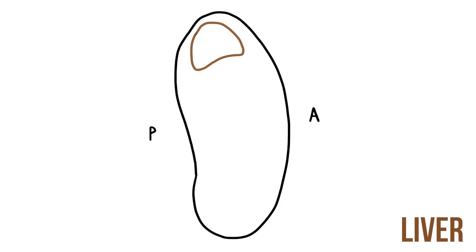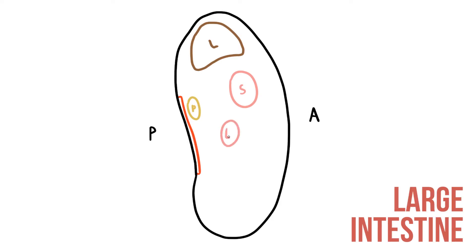So at the top we'll have the liver. Posteriorly we'll have structures like the pancreas and aorta. And then we need to add the great and good of the gastrointestinal tract, so things like the stomach, the large intestine and the small intestine.